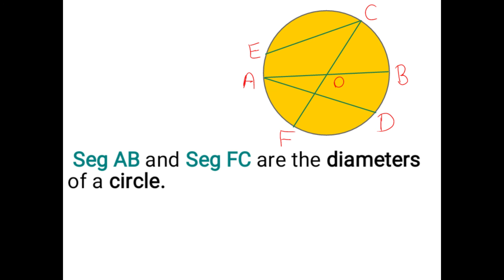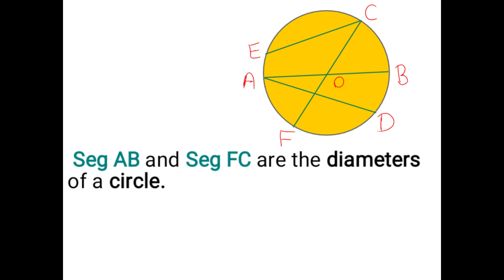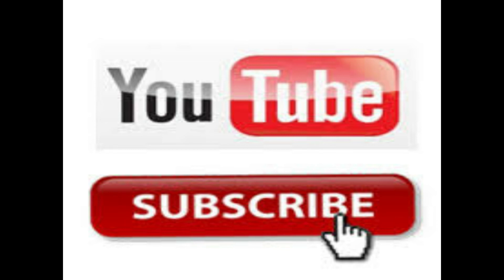Segment AB and segment FC are the diameters of the circle. These two segments, segment AB and segment FC, come through the middle, passing through center O. A line drawn fully on the circle through the center is the diameter. If you like this video, please give us feedback or comments — like, share, and subscribe. Thank you.